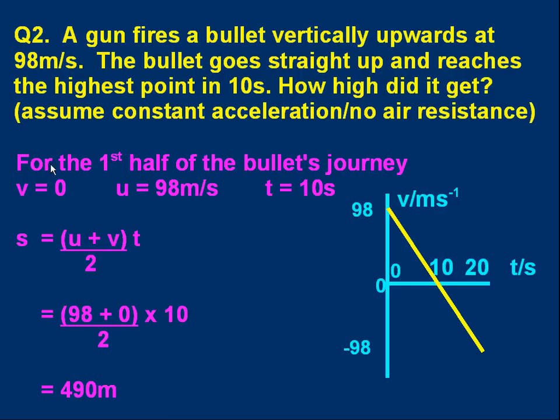Let's calculate the height. For the first half of the bullet's journey, that's from the gun to the maximum height, v is zero. That means at the maximum height, the final velocity is zero. u was 98 meters per second, t was 10 seconds. We can just put numbers straight into the formula, and it's trivial. 490 meters. You'll notice that all we had to do really was multiply the average velocity by the time. The average velocity was the average of 98 and zero, which is 49 meters per second, times 10 seconds, 490 meters.